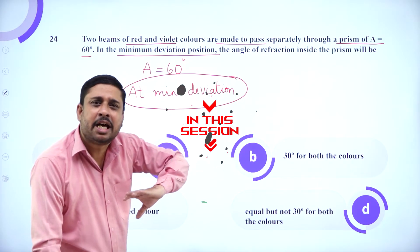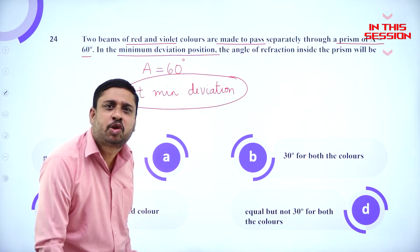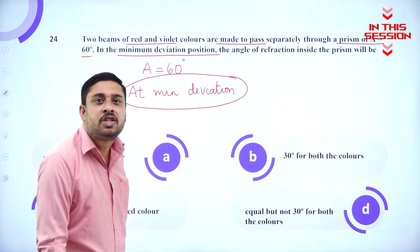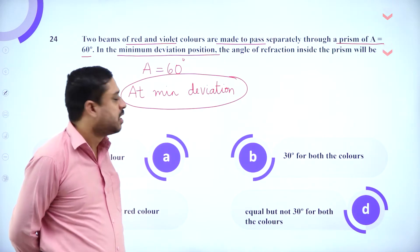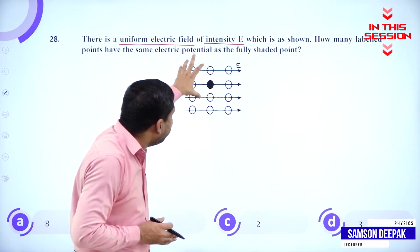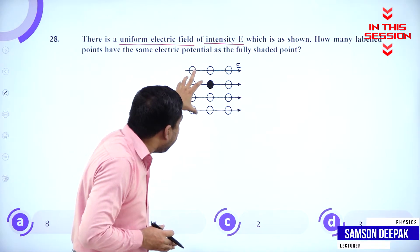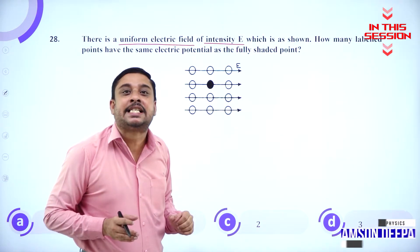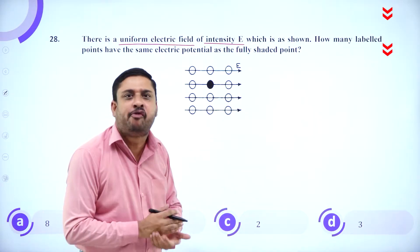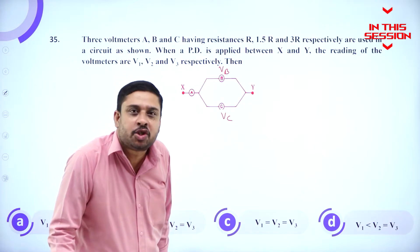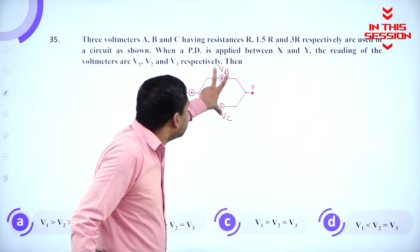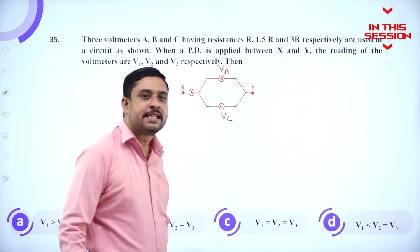These are not higher order mathematical calculations; they are simple logic-based calculations. In a uniform electric field, a charge will experience the same magnitude of force. The output potential of two terminals will be the same as two voltmeters connected in parallel.